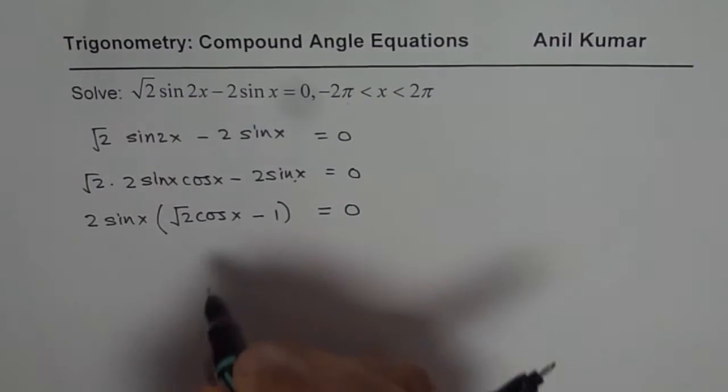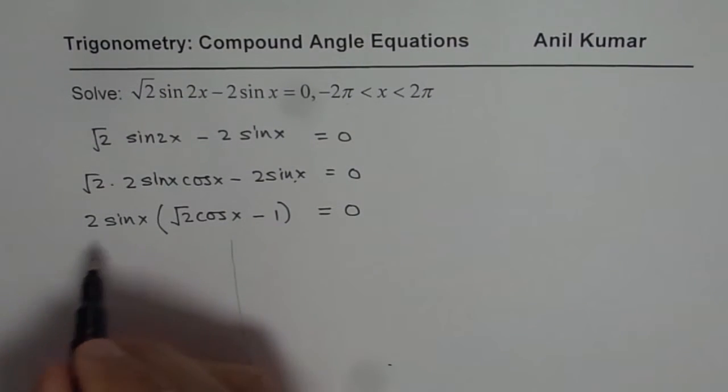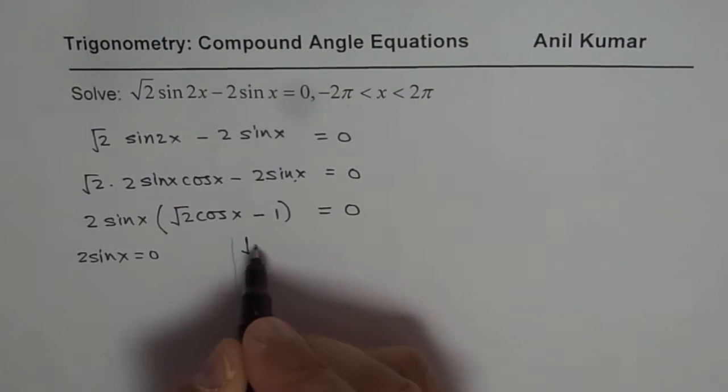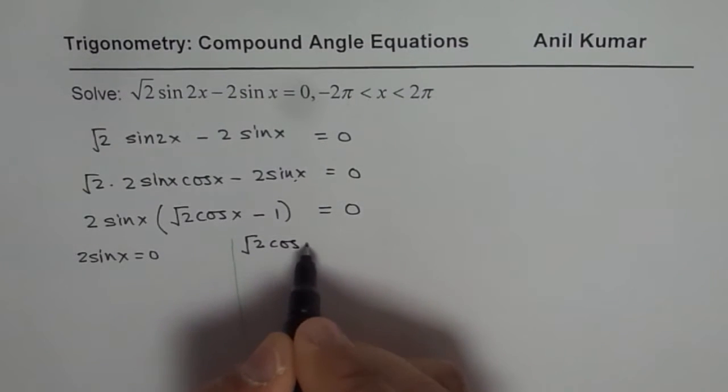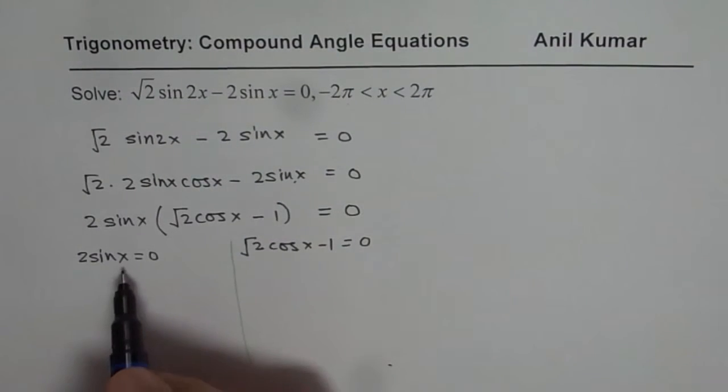Now this gives us two different factors which could be 0. So first one is 2 sin x = 0 and the other one is √2 cos x - 1 = 0. We can find possible solutions within the given domain from these two.